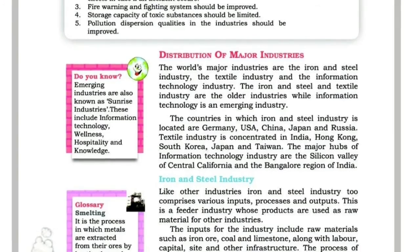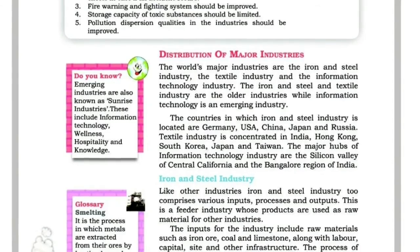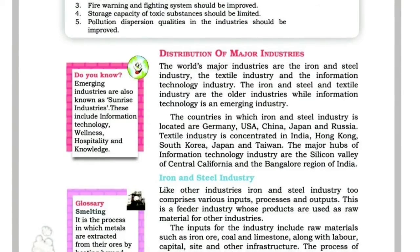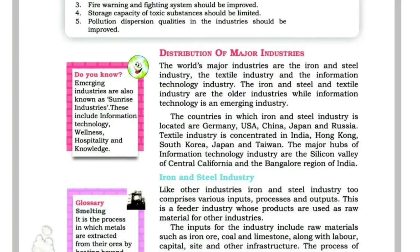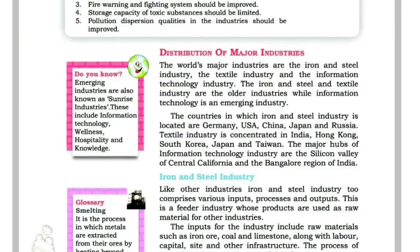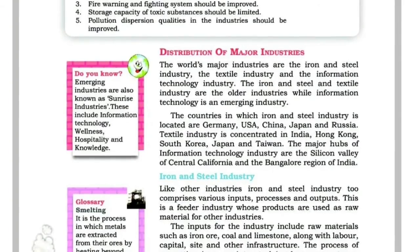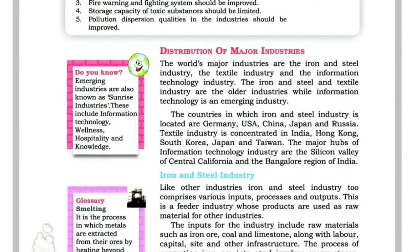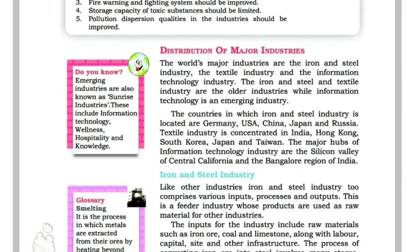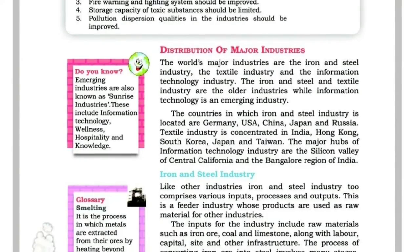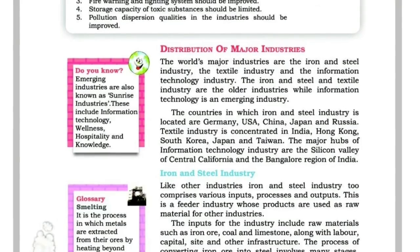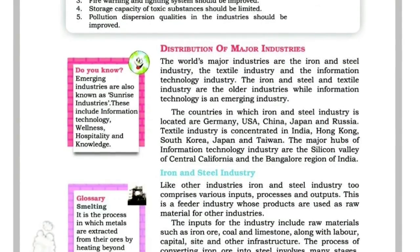Like other industries, the iron and steel industry comprises various inputs, processes and outputs. This is a feeder industry whose products are used as raw materials for other industries.